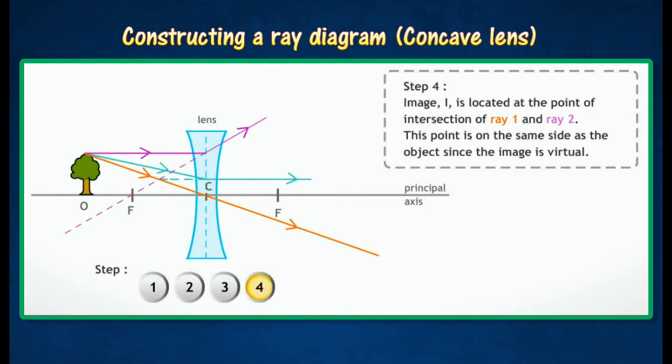Image is located at the point of intersection of all the above rays. This point is on the same side as the object since the image is virtual.